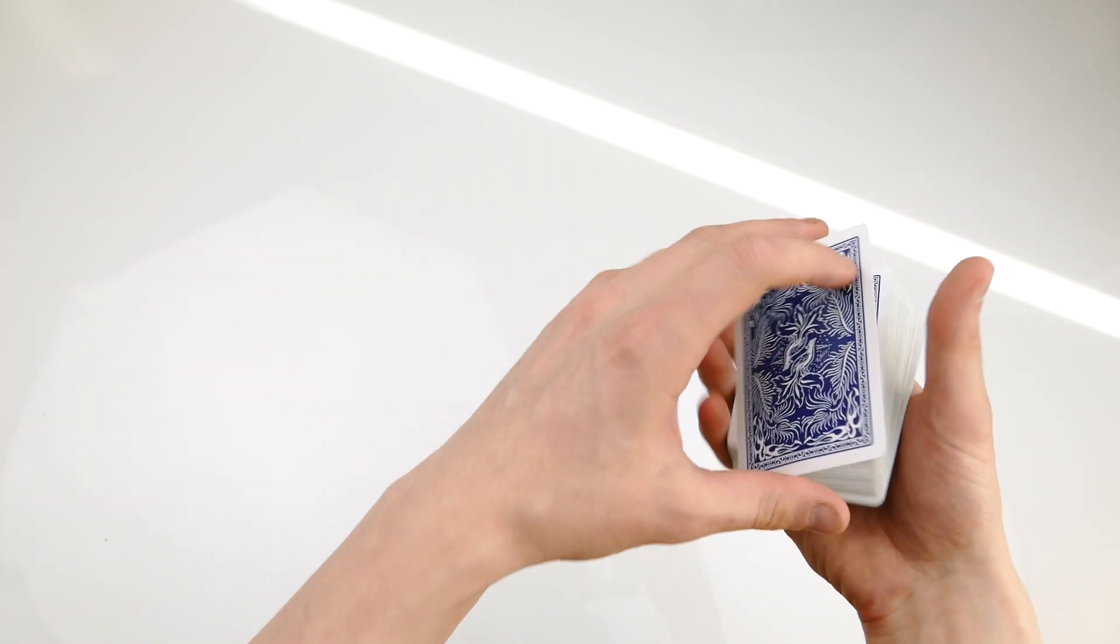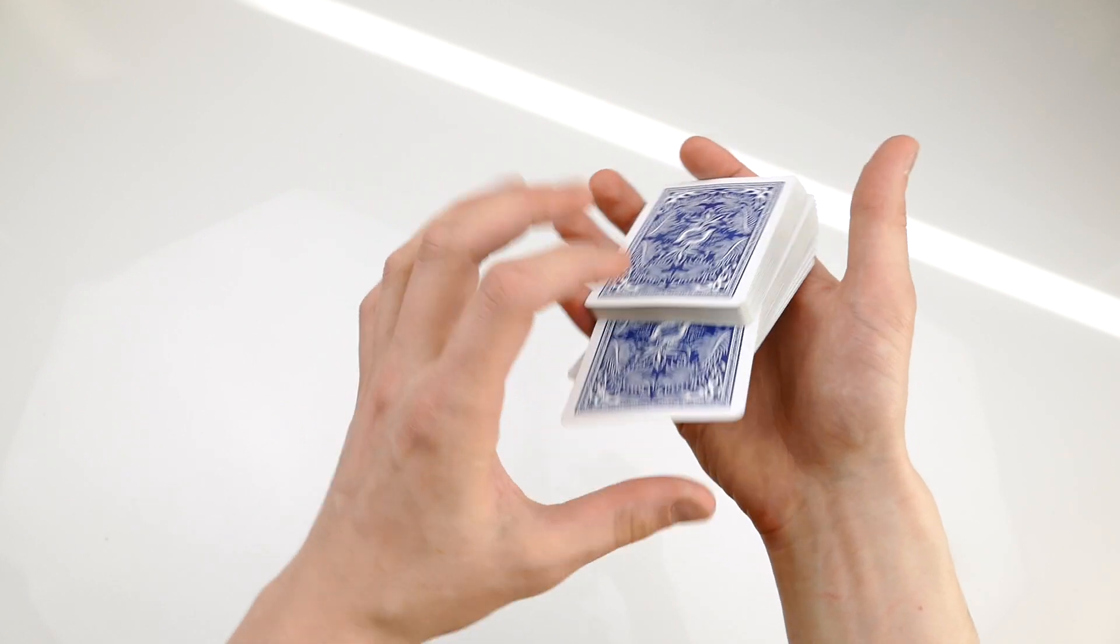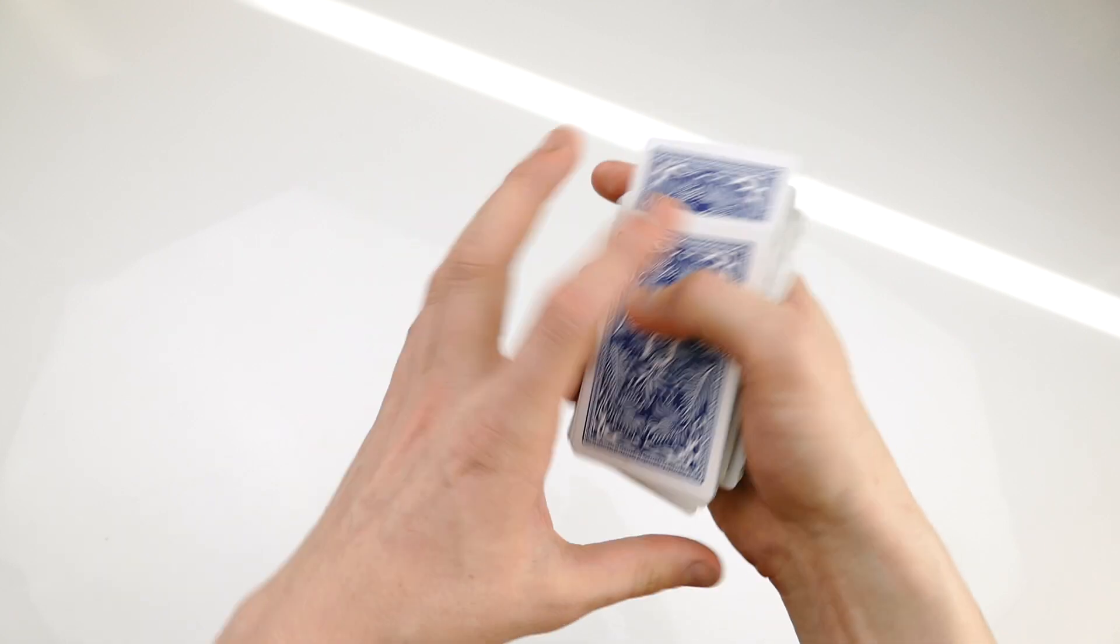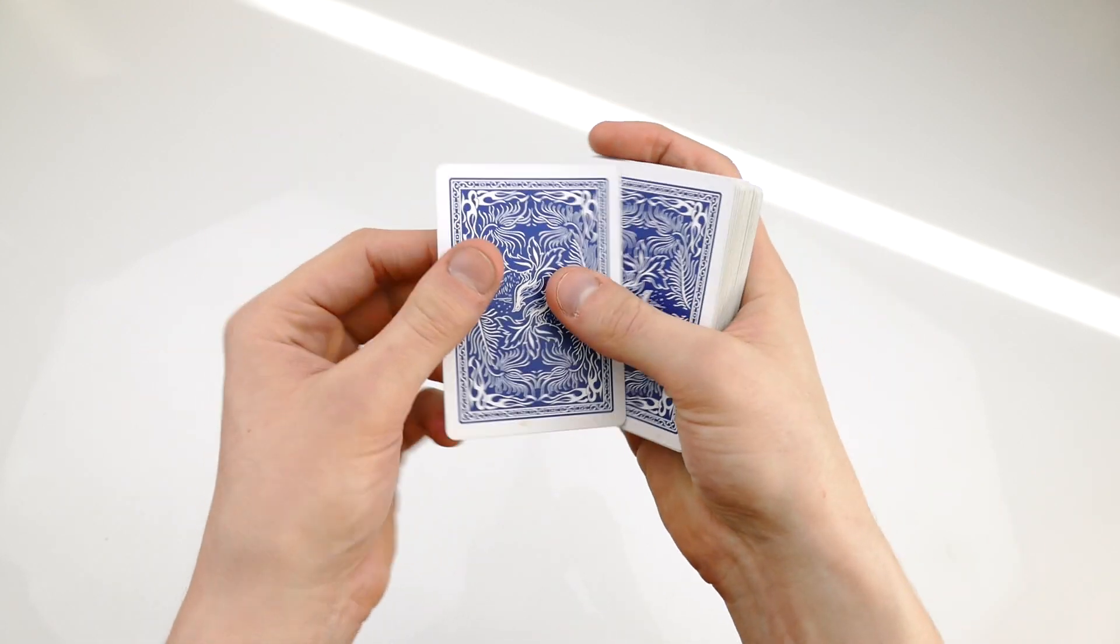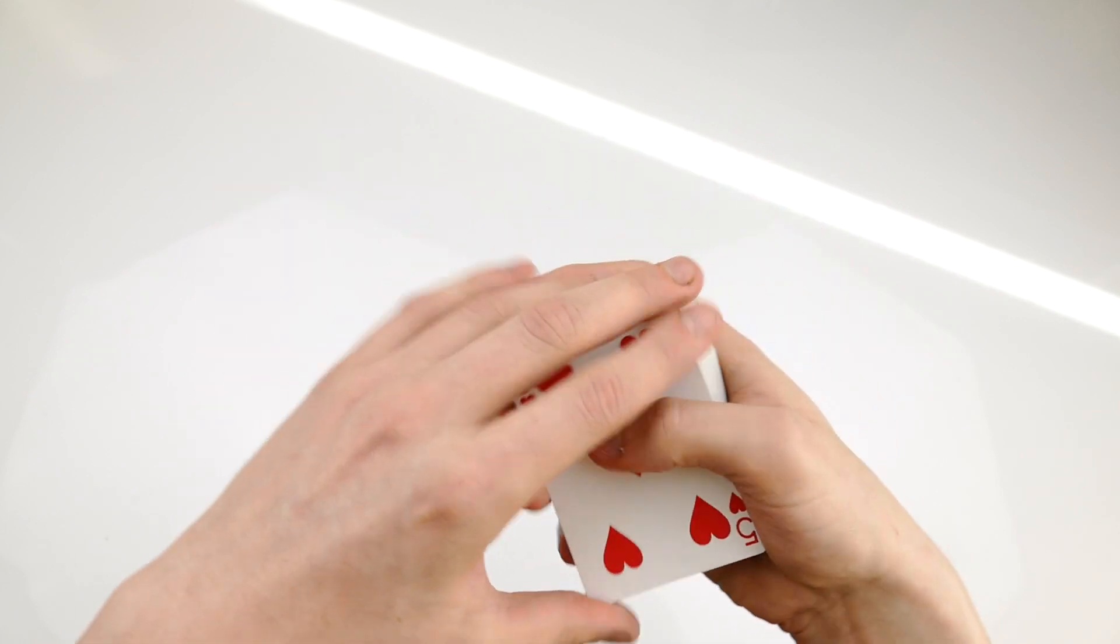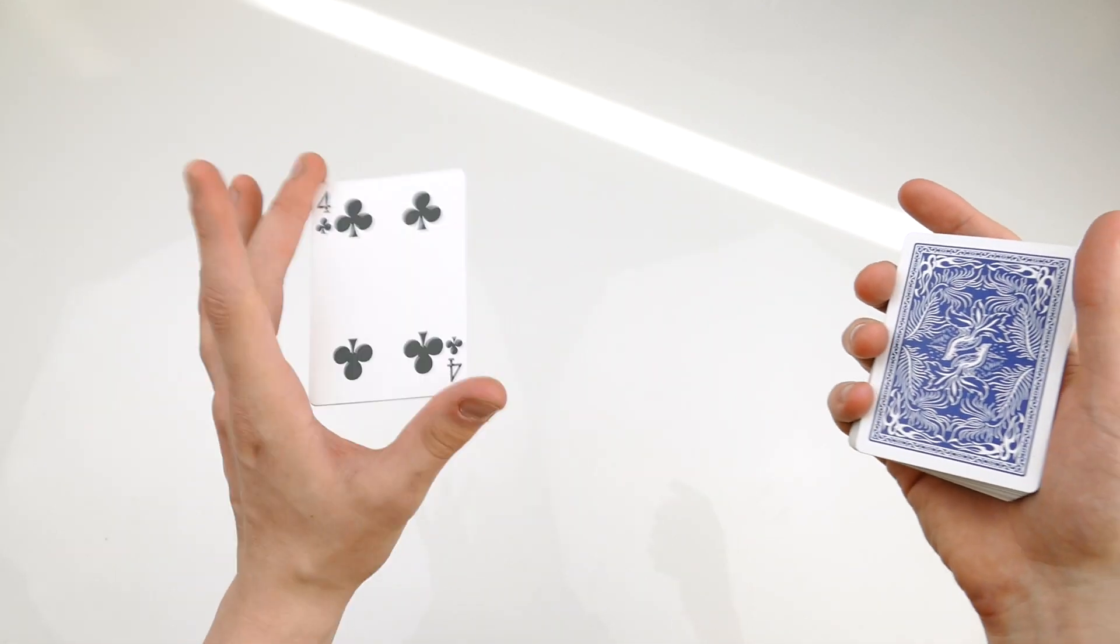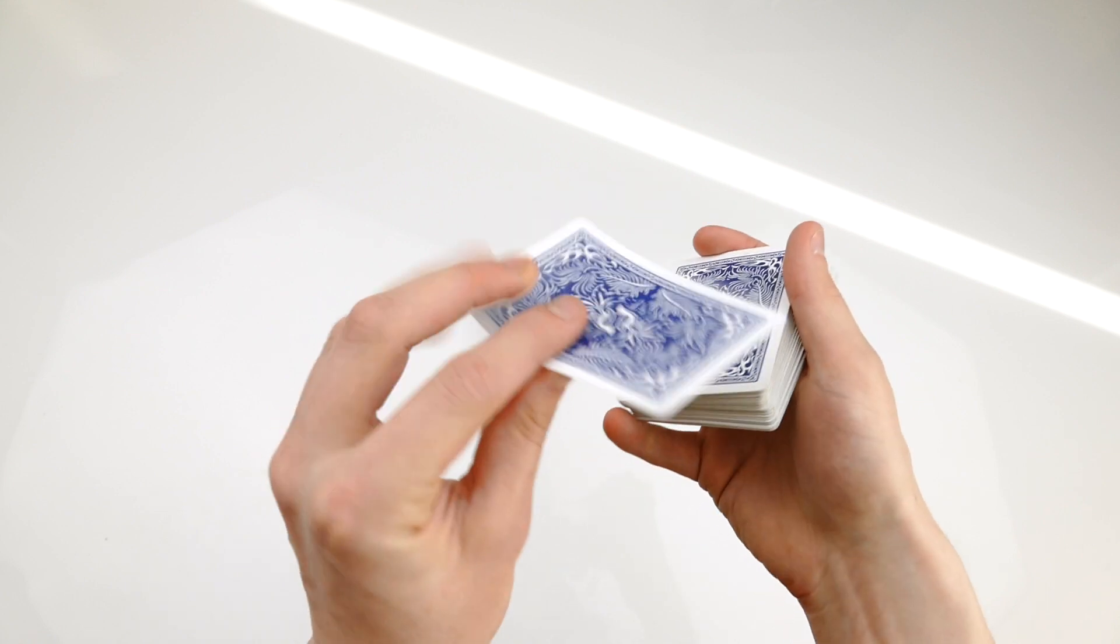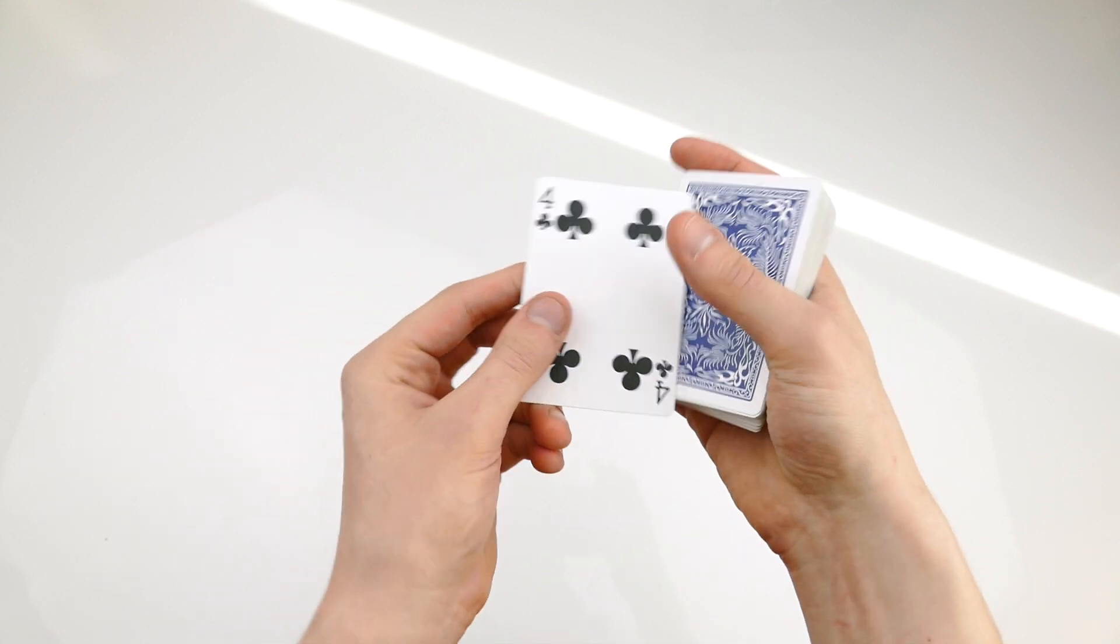A card is selected, let's say the four of clubs. I'm going to place it inside the center of the deck, give the deck a quick shuffle just like this, and now I am going to be using the top card which is the five of spades. If I shake it, it changes just like that into the four of clubs.